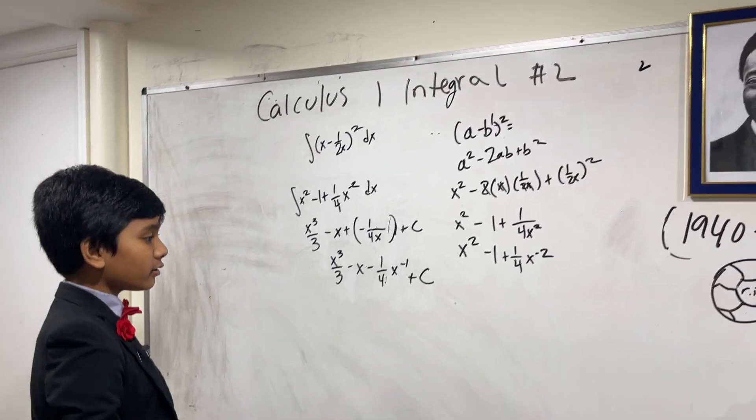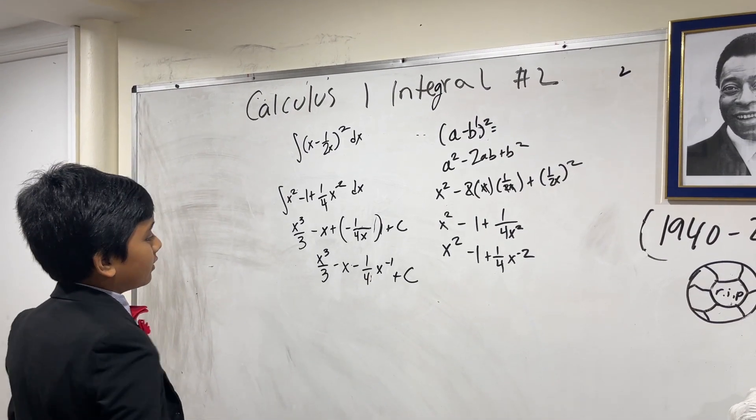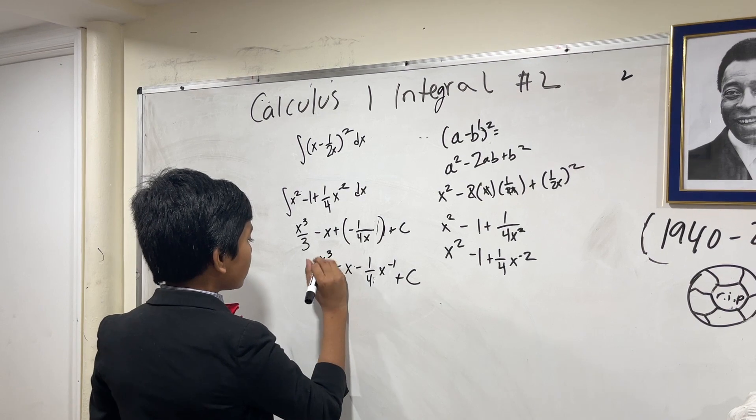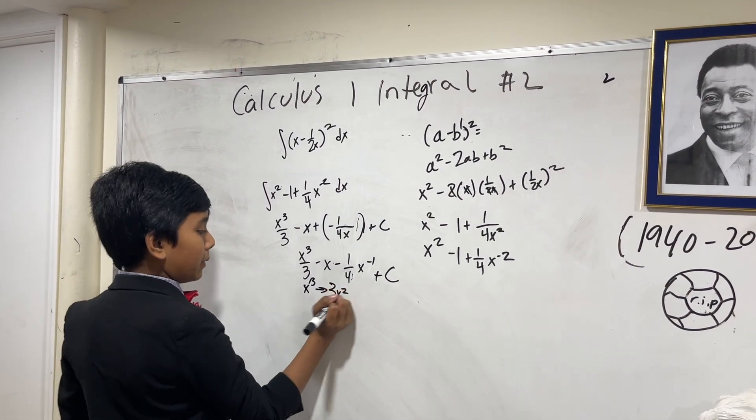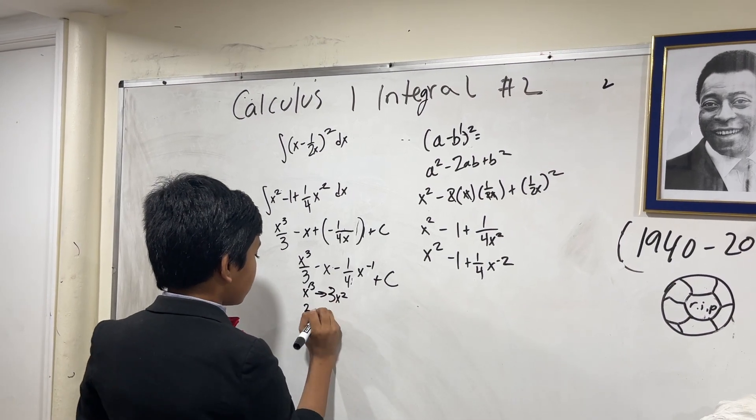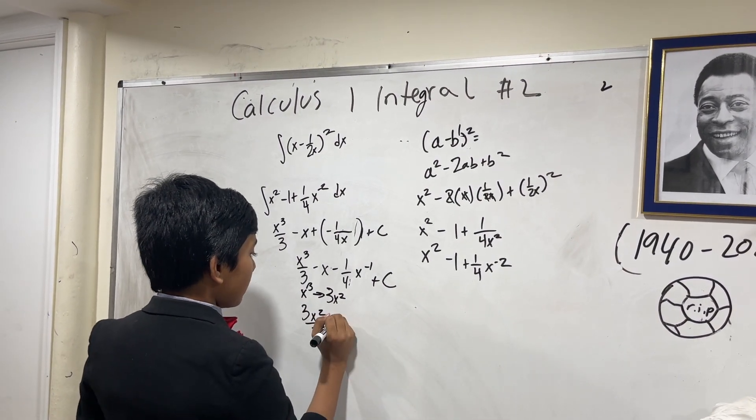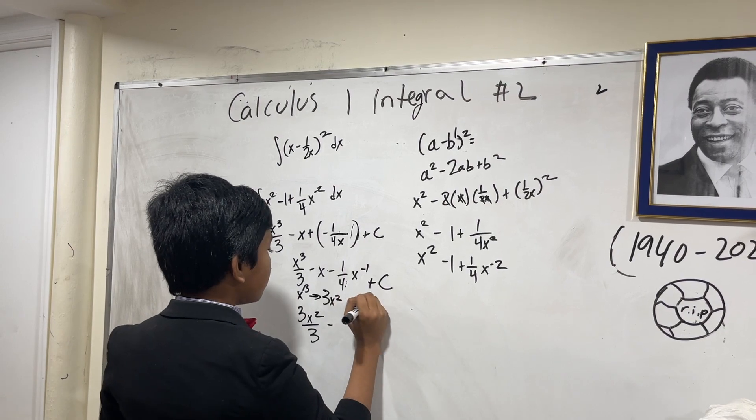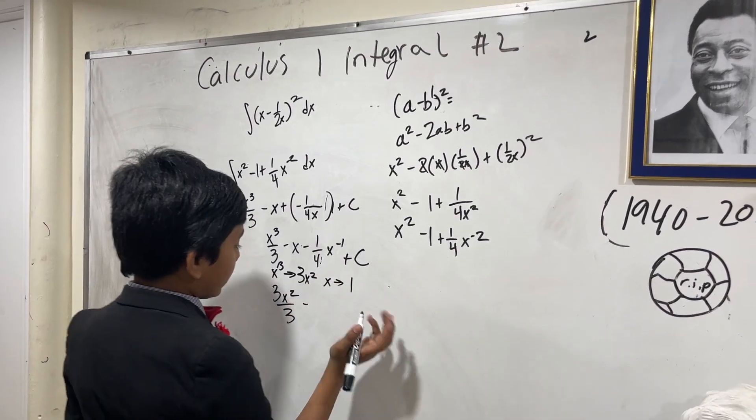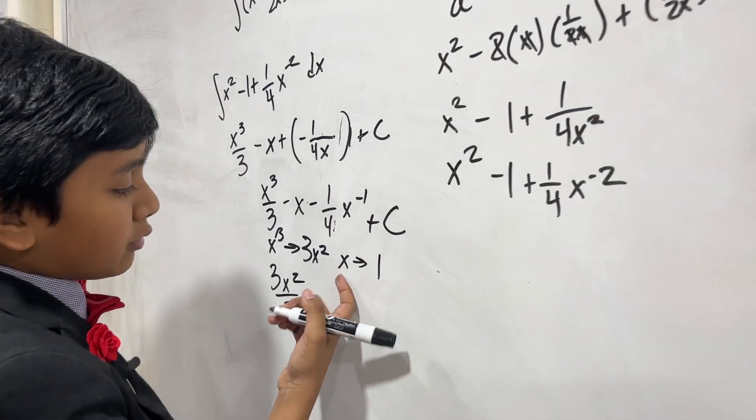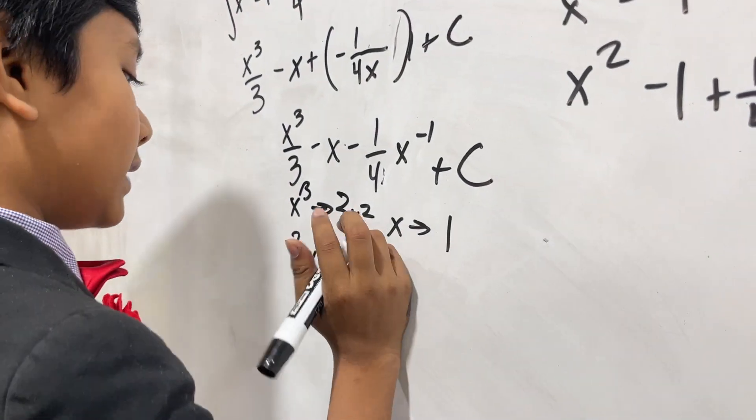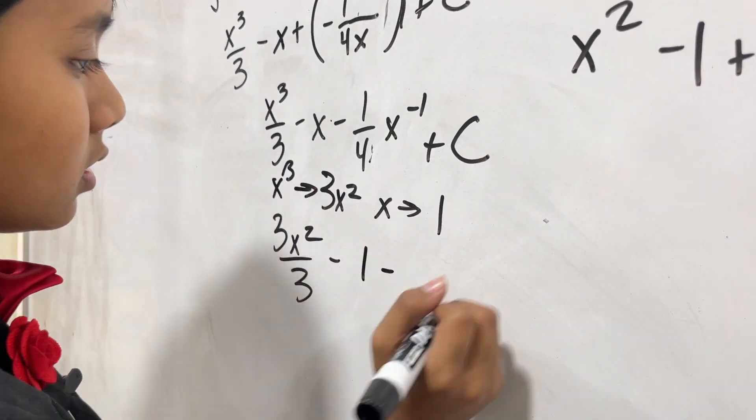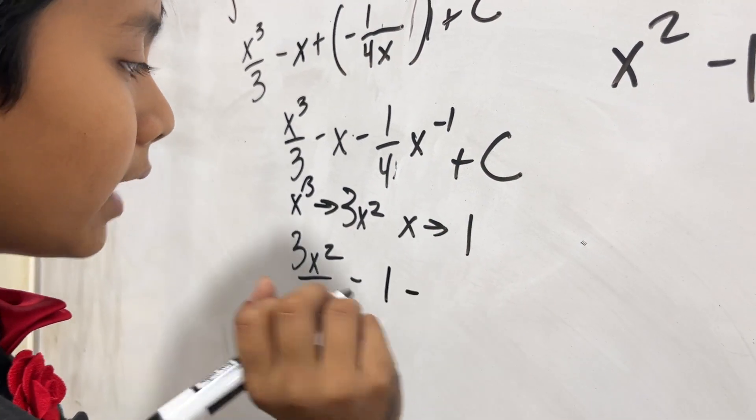Now, taking the derivative is also a pretty simple process. Taking the derivative of this, the x cubed on top becomes 3x squared via the power rule, so we have 3x squared over 3. Minus x becomes 1, because when you are differentiating a single variable, that variable becomes 1. You just get the coefficient. So minus 1.